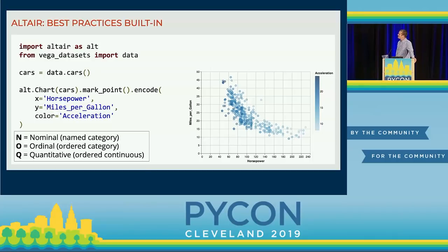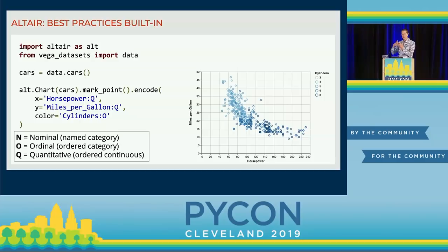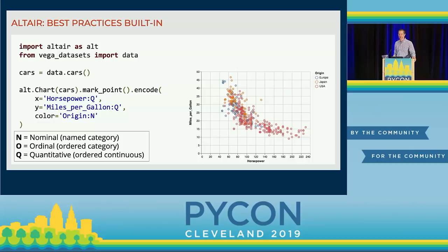Another nice thing built into Altair is the idea of using the right color maps for the right data. If you specify a quantitative value for color, it'll choose a quantitative color map. A colon Q for quantitative tells it the data type. If you change to an ordered value, you get the same color map but automatically get a legend showing the categories rather than a continuous color bar. And if you change to a categorical type with no order — like origin — it automatically shifts the color map to something appropriate for categorical data. You don't have to think about color maps anymore; as long as your data type is specified correctly, the color map will be correct.